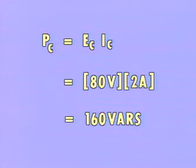Reactive power, on the other hand, has no effect on the energy source. It is simply volts times amperes. The reactive power of the capacitor is calculated as it was in a purely capacitive circuit by multiplying the voltage across the capacitor by the capacitive current.